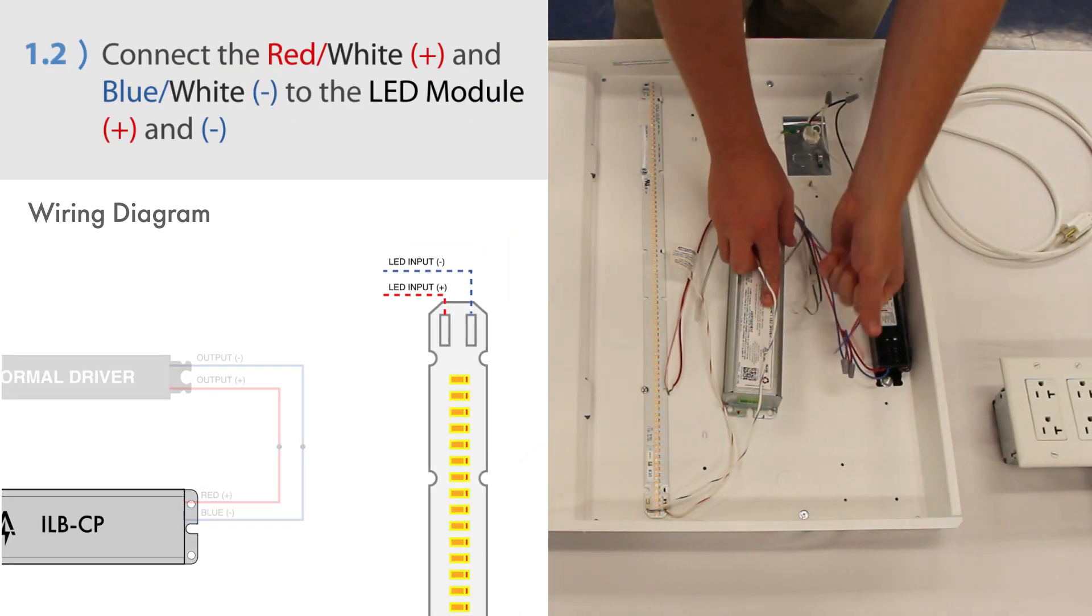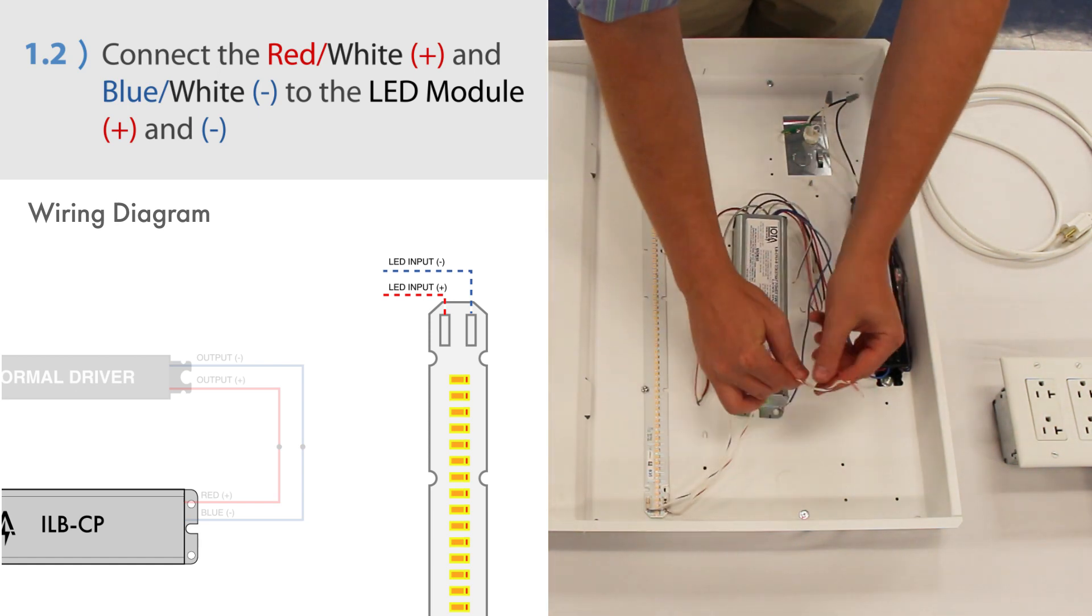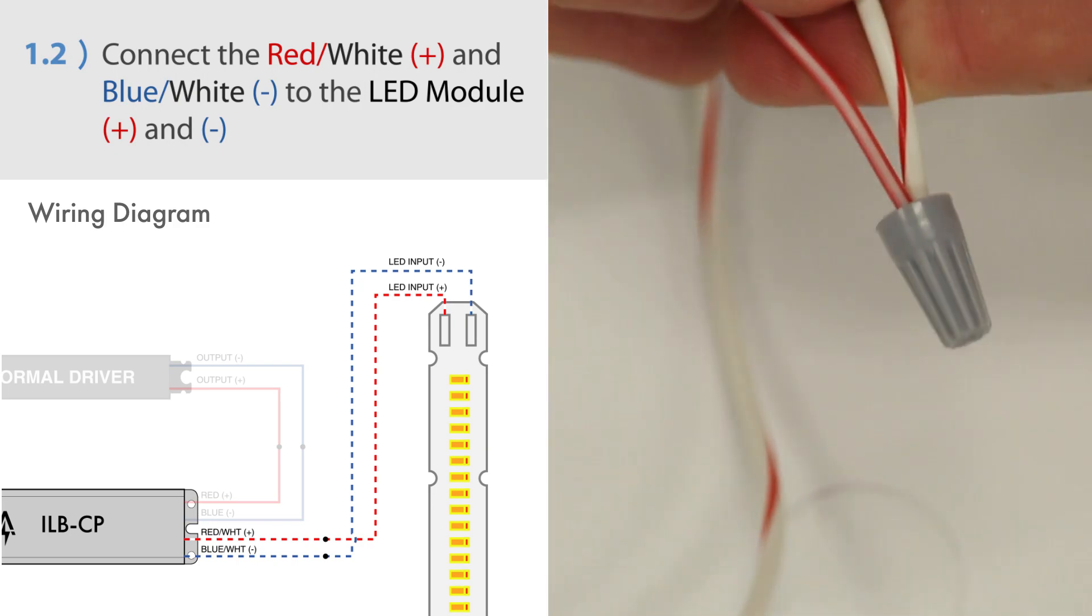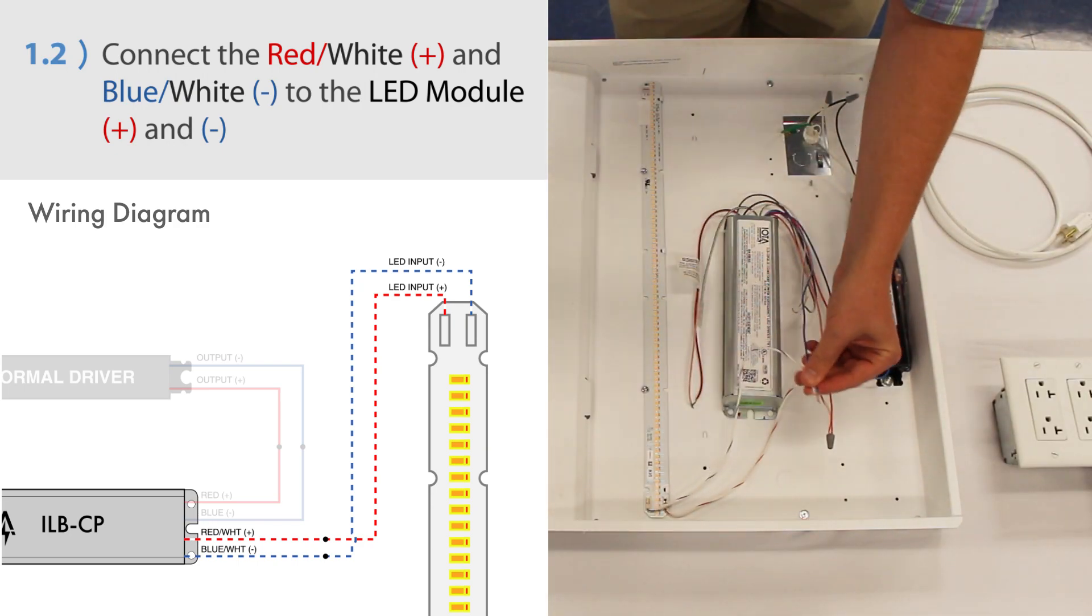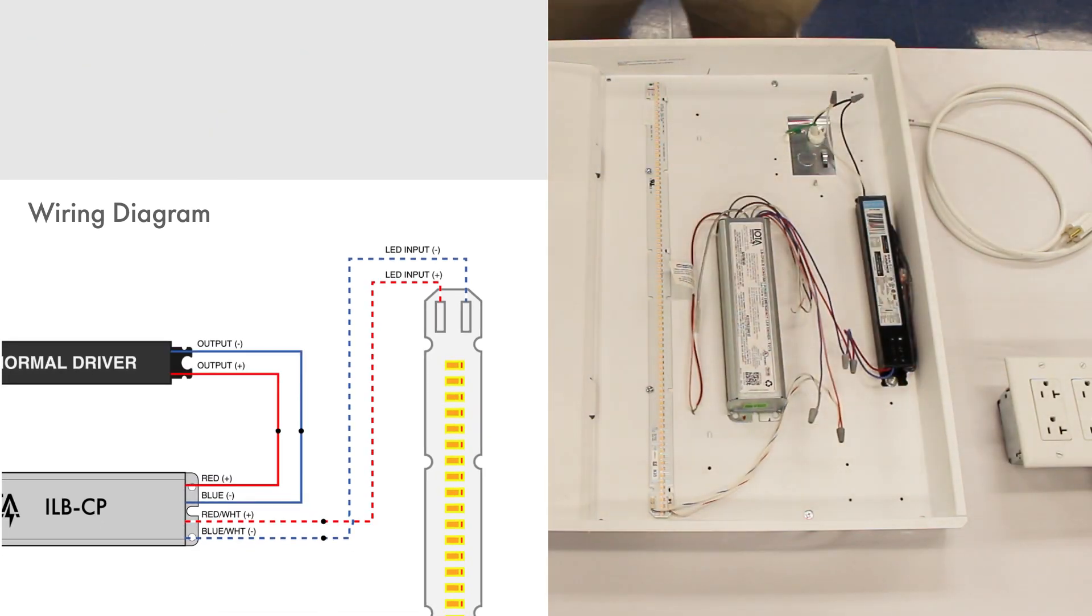Next, connect the red-white positive and blue-white negative wires from the ILB-CP to the positive and negative inputs on the LED module. Again, be sure to observe polarity. Afterwards, the output of the ILB-CP will be wired successfully.